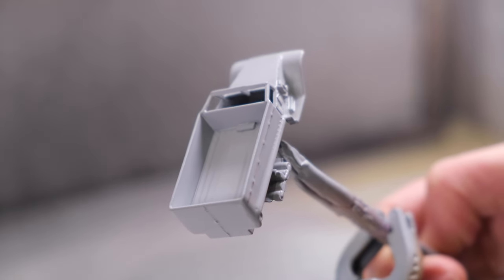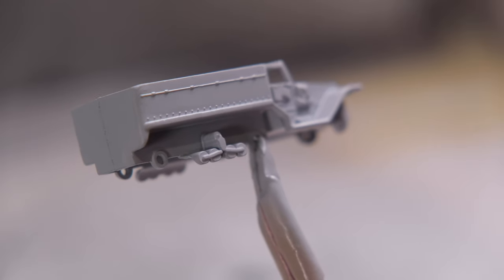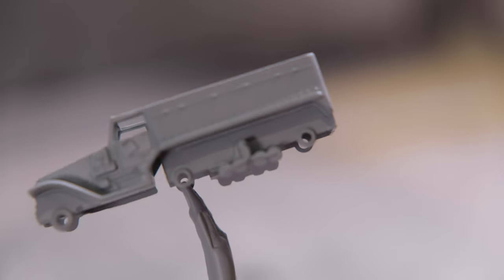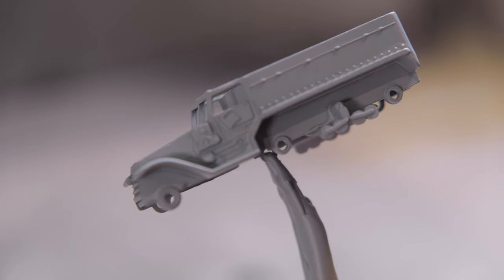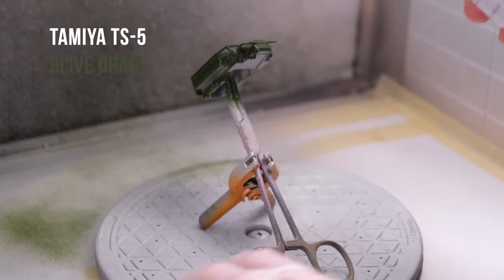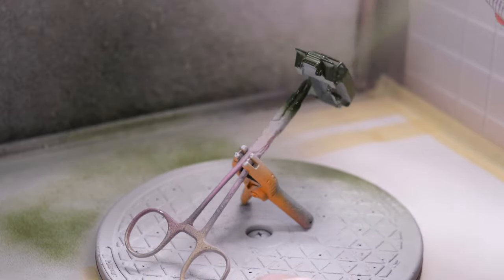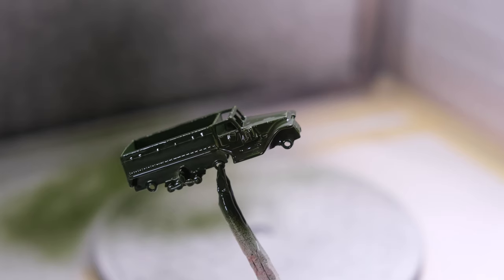The model is based on the M3 half track personnel carrier, manufactured by the American Autocar, Diamond T and White Motor Companies for the Allied Forces use during World War II. It was a development on the lighter M2 half track car and began being produced in 1941. More than 15,000 standard and 38,000 variant M3s were built until 1945. They were later used in the Cold War.